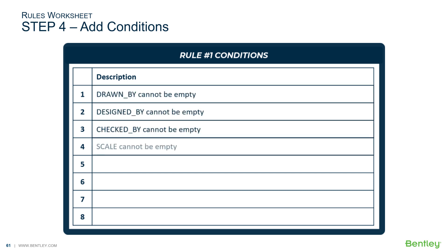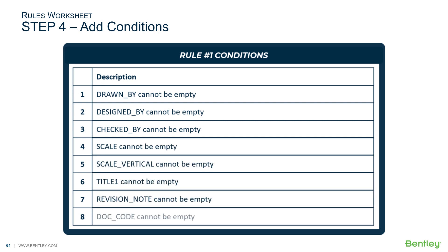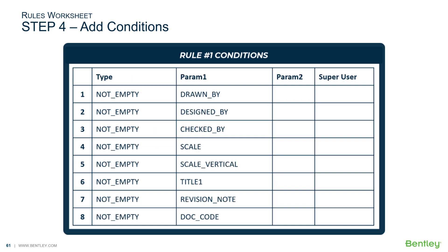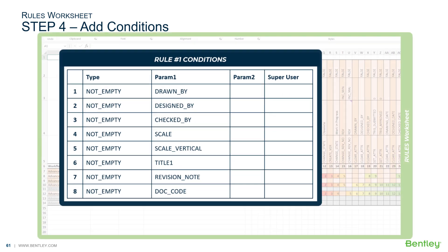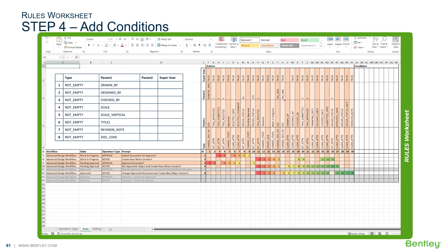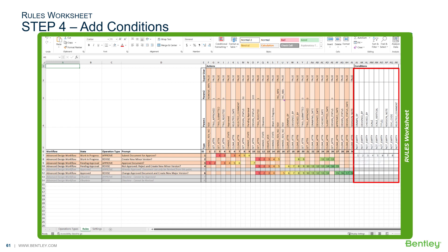The eight attributes that need to be populated are: drawn by, designed by, checked by, scale, scale vertical, title one, revision note, and dot code. After looking at the ProjectWise Administrator help, we find the correct syntax for each condition. We then add the conditions in the proper order to the rules worksheet.